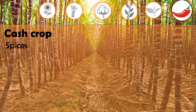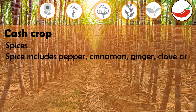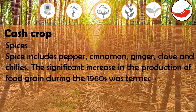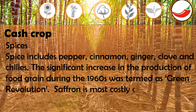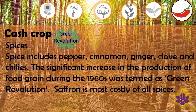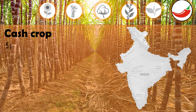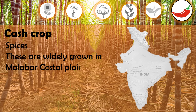Spices include pepper, cinnamon, ginger, clove, and chillies. The significant increase in the production of food grains during the 1960s was termed as the Green Revolution. Saffron is the most costly of all spices. Spices are widely grown in the Malabar coastal plains of Kerala and Karnataka.